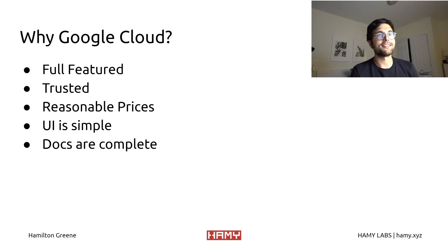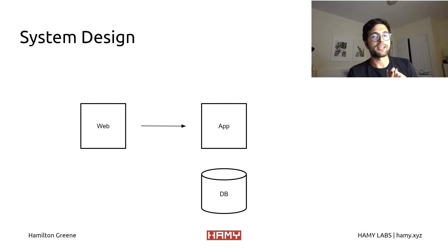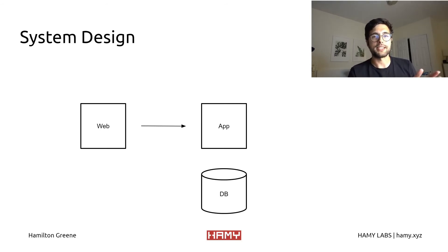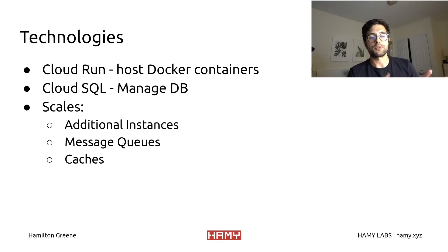Now let's talk about the specific technologies I'm using. This is the common system design I use in almost all of my projects: just a web tier, an app tier, and a DB tier. The web tier serves up the front end and deals with external sources. The app is the API layer, doing app logic and heavy lifting, and talking to whatever else we might add on the platform. And then the DB is our persistent store for any data we might want. The technology I chose from Google Cloud to host these is Cloud Run — the serverless container runner I was talking about previously — which hosts the Docker containers for both the web tier and the app tier.